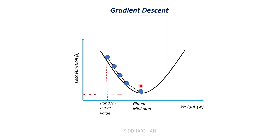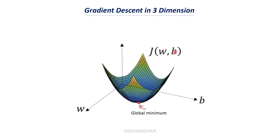We start from a set of random parameter values and work our way toward the global minimum point. In three dimensions, we have the cost function J(w, b) with weight on one dimension and bias on another — the global minimum is at the bottom of the bowl shape. We start from any point and gradually change our weight and bias values until we reach the global minimum, at which point we have minimum cost function value and the model predicts accurately.